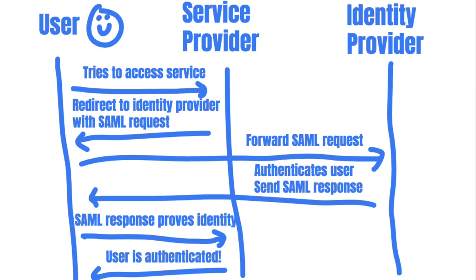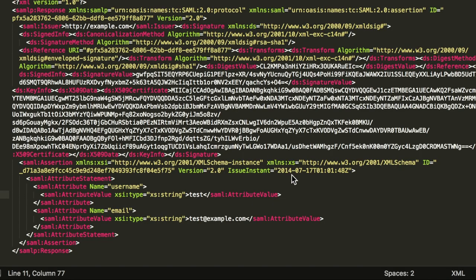As you can see from the diagram, the SAML response is how the service provider determines who the user is. If an attacker can control and manipulate the SAML response passed to the service provider, they can trick the service provider and authenticate as someone else. Since the SAML response is used to relay authentication information, it usually contains fields that communicate that data — for example, fields like username, email address, and user ID. If the attacker can tamper with these fields, they can change the outcome of the authentication.